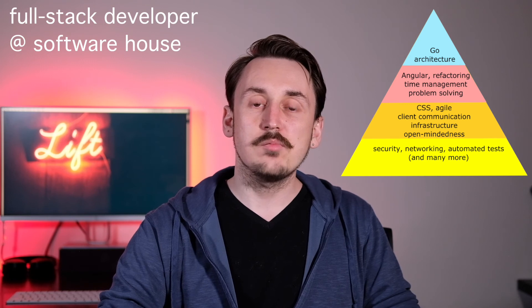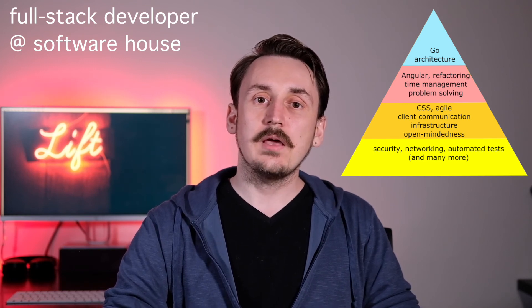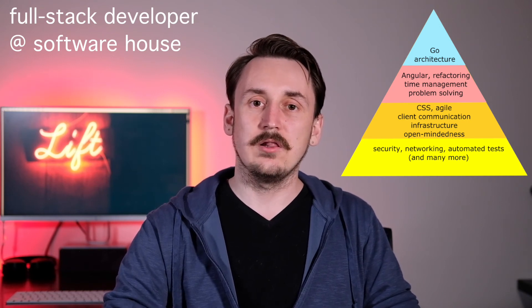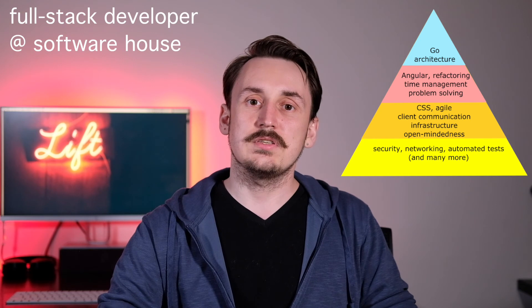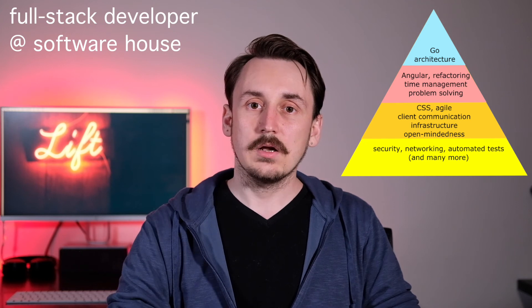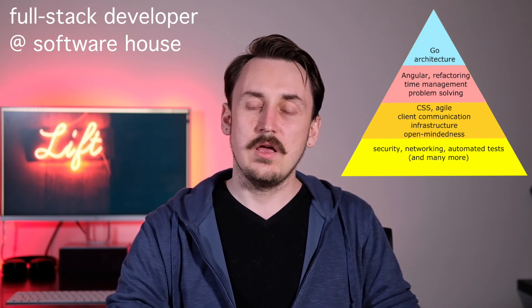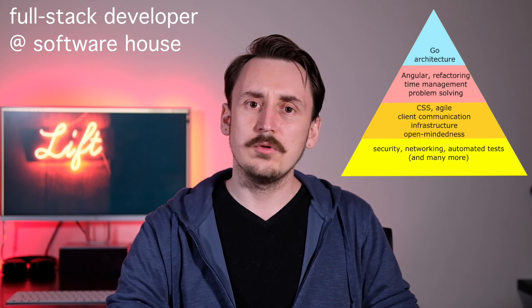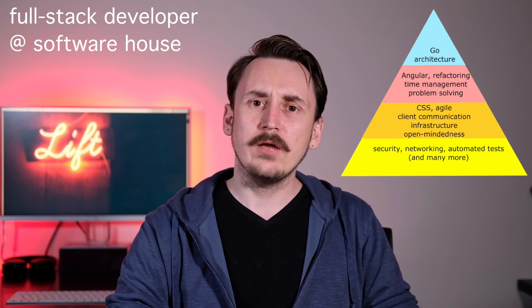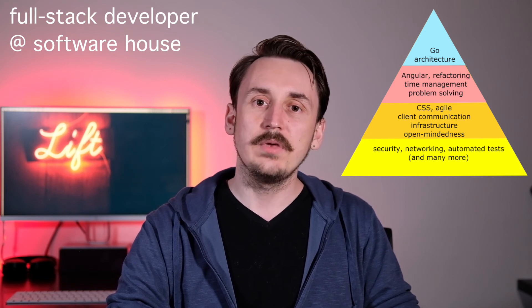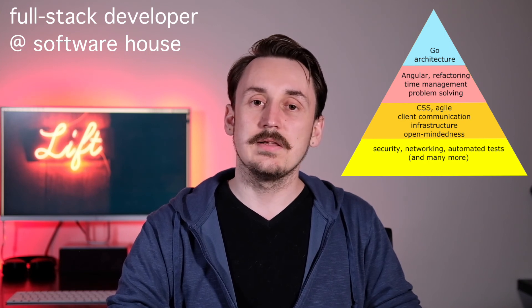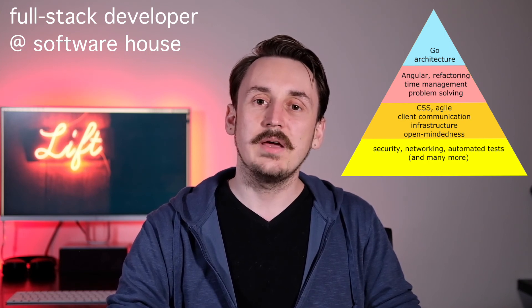On the second level, I put things I will not be expert in but want to be able to use: CSS, which I will be using as a full-stack developer; agile methodologies, which I need to work with especially across multiple clients; client communication and open-mindedness, which are very important when you work at a software house; and infrastructure, which I'm interested in — and even though I don't work with server infrastructure daily, I would like to be able to do basic server management. And on the bottom level, I put some example skills, and there will be many more things there.